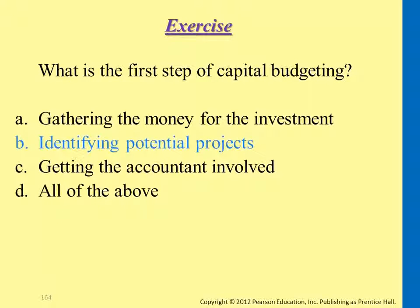Remember that CD player and DVR example — they're looking at which areas they need to improve. Those are the potential projects, and then they use four tools to analyze them to find which one has the highest profit, highest NPV, highest IRR.